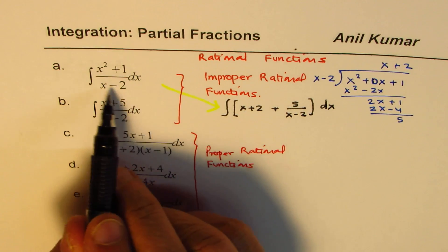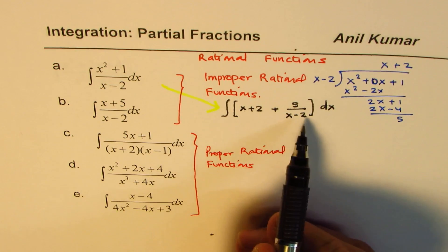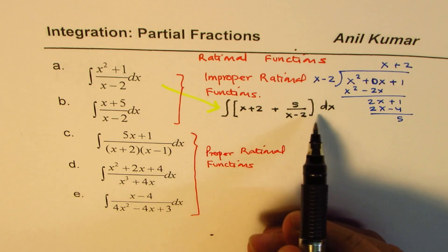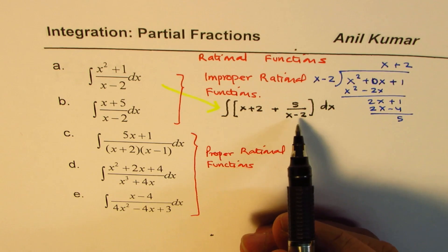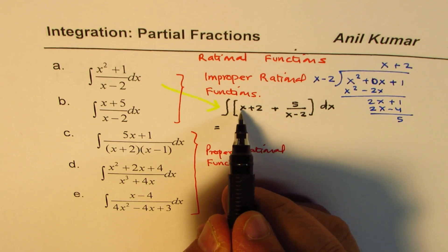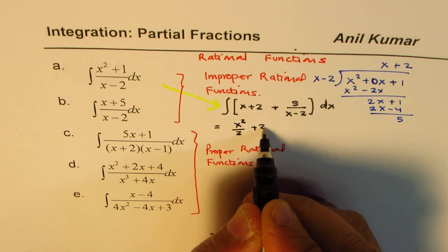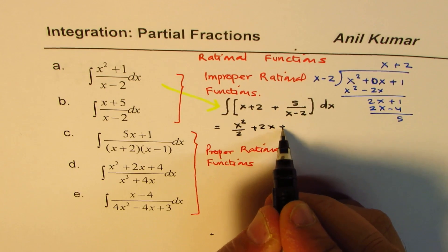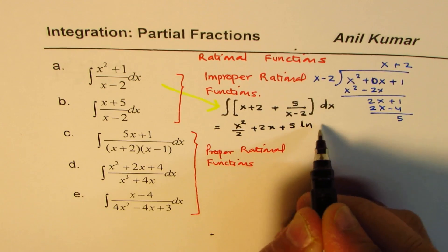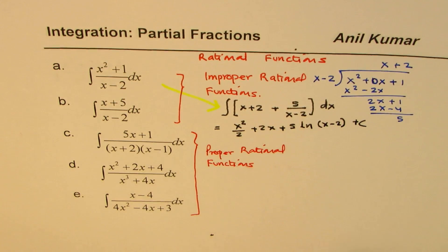So the integration of this rational function reduces to that kind of a function, and now it is kind of simpler, right? So the answer is kind of, let's do it here. So x integration will be x square by two, this will be plus two x, and here will be plus five ln x minus two plus c. So we get the result.